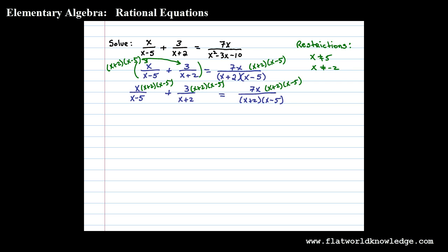Multiplying both sides by the LCD is equivalent to multiplying each term by the LCD. Once we do that we can then cancel. So in this term x minus 5 cancels and that leaves us with x times x plus 2. Here the x plus 2 cancels leaving 3 times x minus 5 equals.